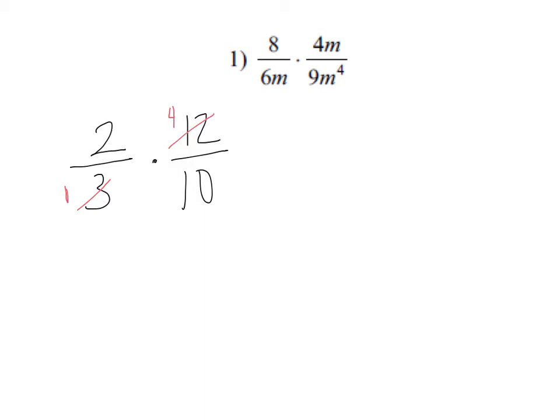They can be catty corner or right above one another. I can also reduce my 2 and my 10. That'd be a 1 and a 5. Once you have everything reduced, you just multiply straight across. 1 times 4 is 4, 1 times 5 is 5, so that reduces to 4 fifths.